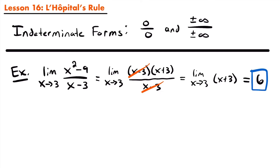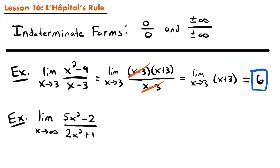The x minus 3 cancels out with the x minus 3 in the denominator, leaving us with the limit as x approaches 3 of x plus 3. Plugging in 3 gives 3 plus 3, so this limit is equal to 6. That's the process we used when solving limits with the indeterminate form of 0 divided by 0.